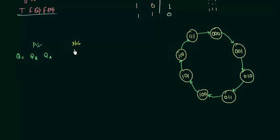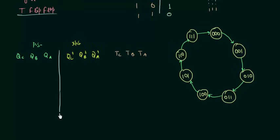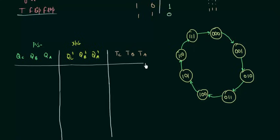In the circuit excitation table we have the flip-flop inputs TC, TB, and TA as three columns. We will find the value of each flip-flop input by using the state diagram and then we can implement it by using the K-map.